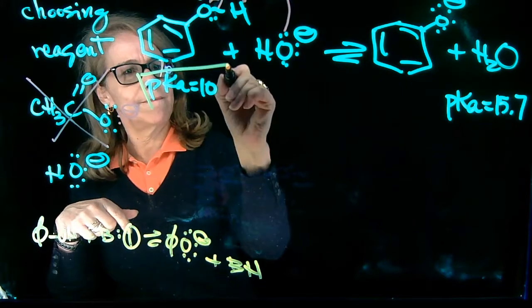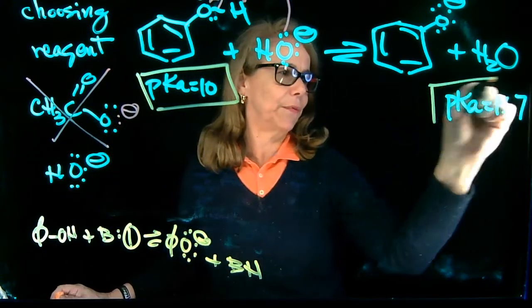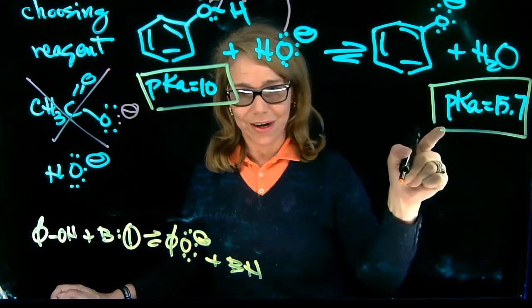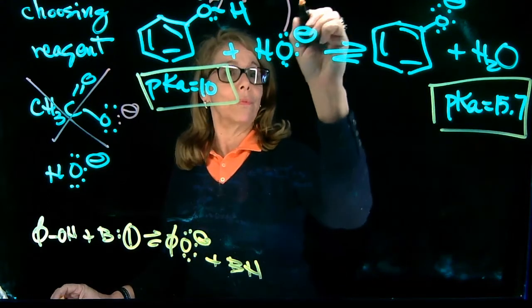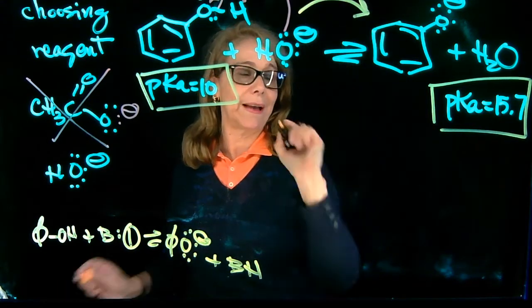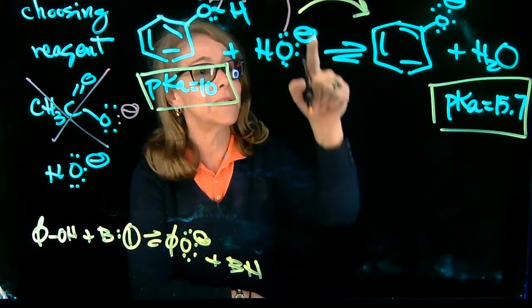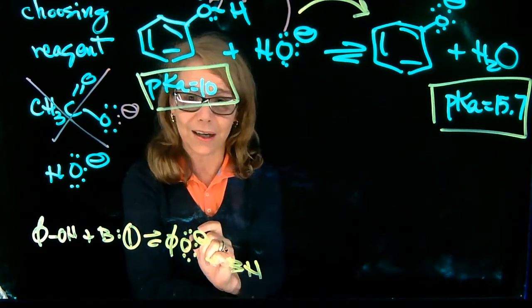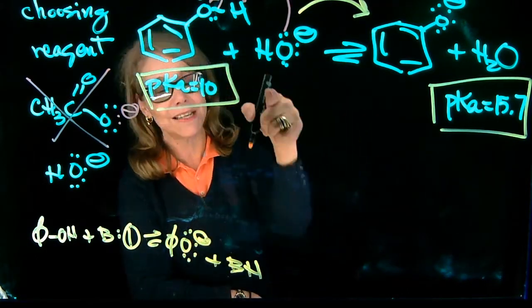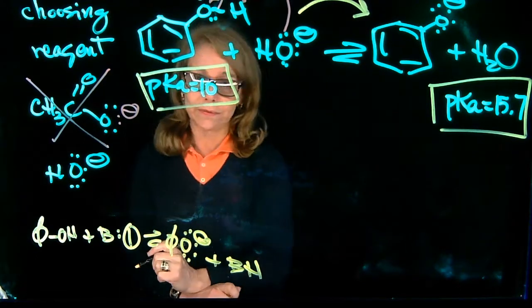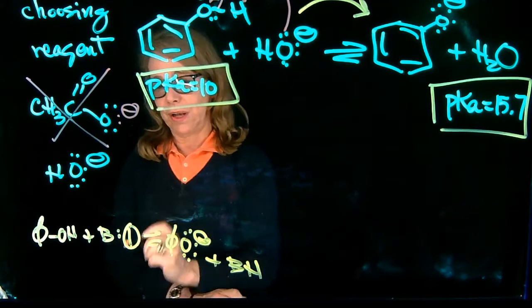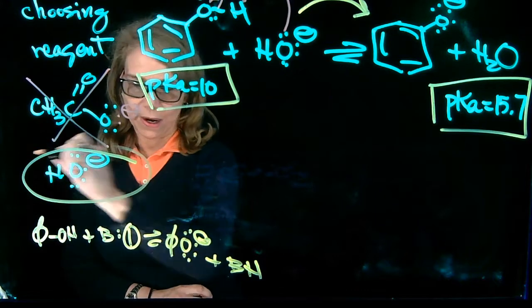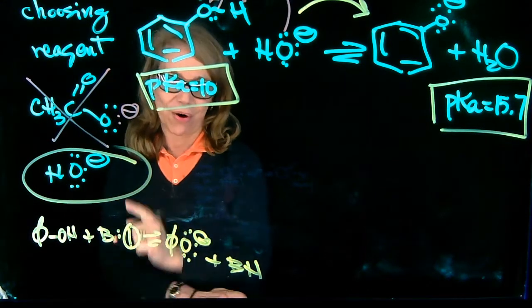Now analyzing pKa's here. This is 10, the phenol. This is 15.7. So that's larger. The equilibrium is now, we know it's shifted to the weakest acid. So the one with the largest pKa. What that says, because the equilibrium is shifted to product, is that this base will effectively deprotonate phenol. So I'm choosing that as my answer on my test. This is the one that works.